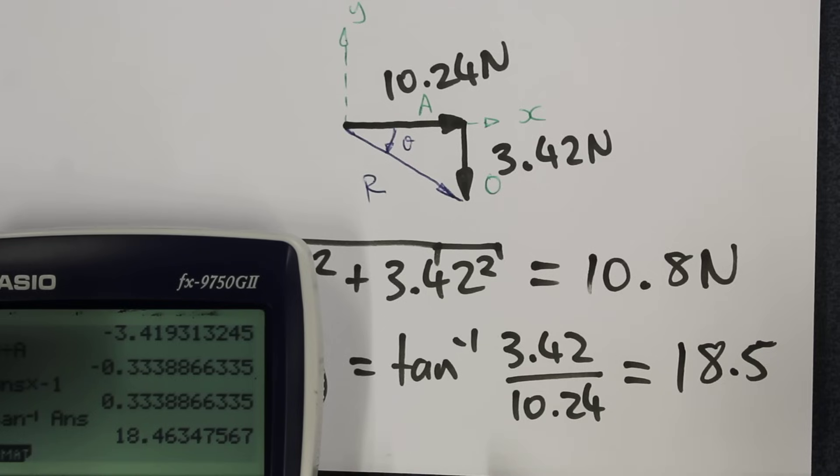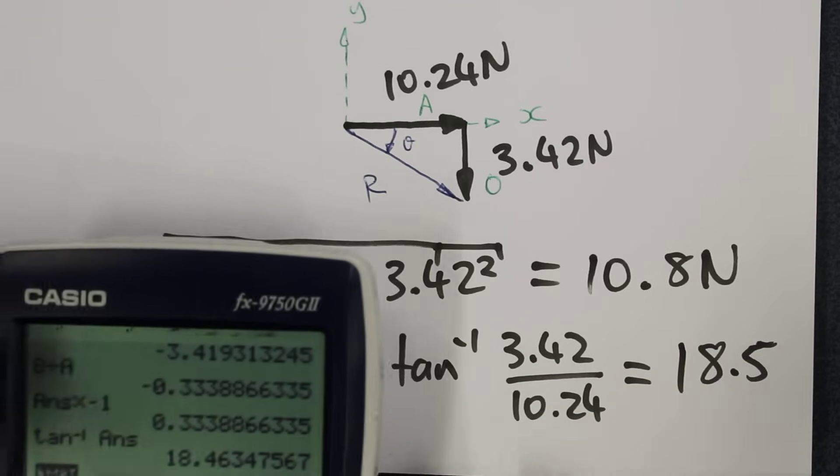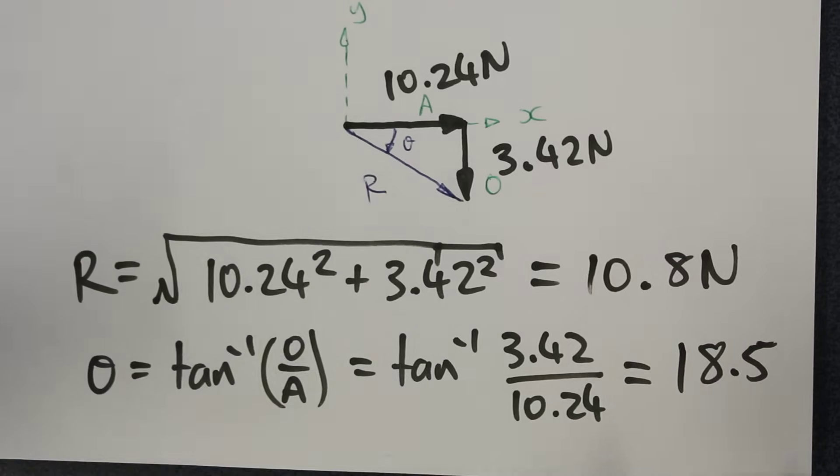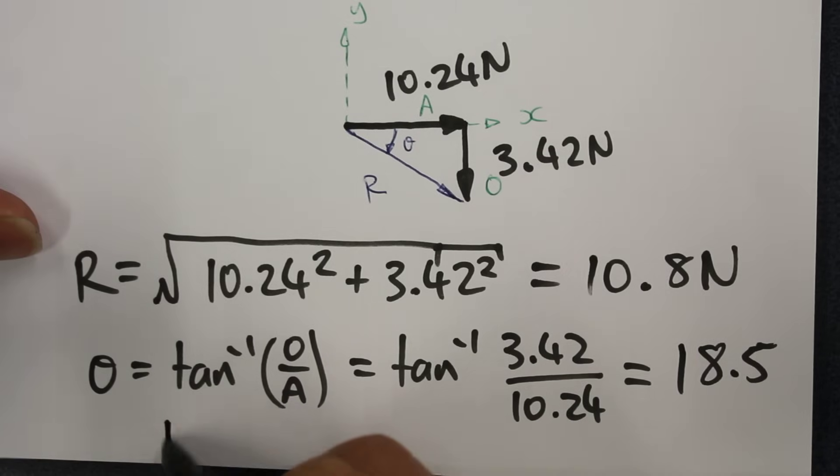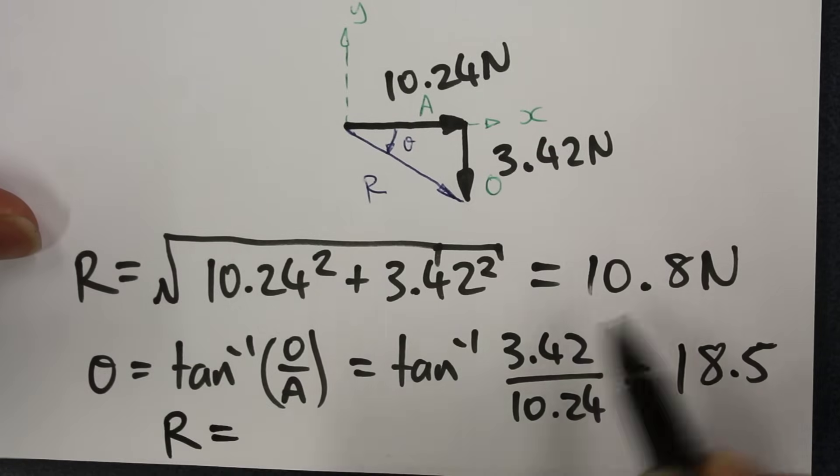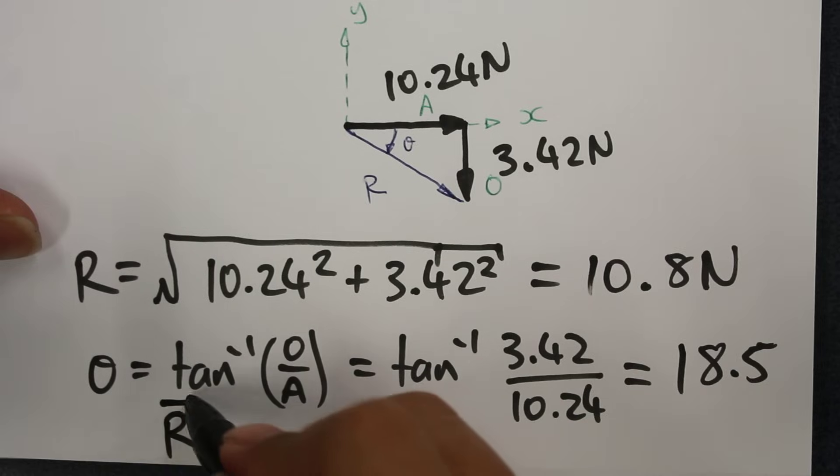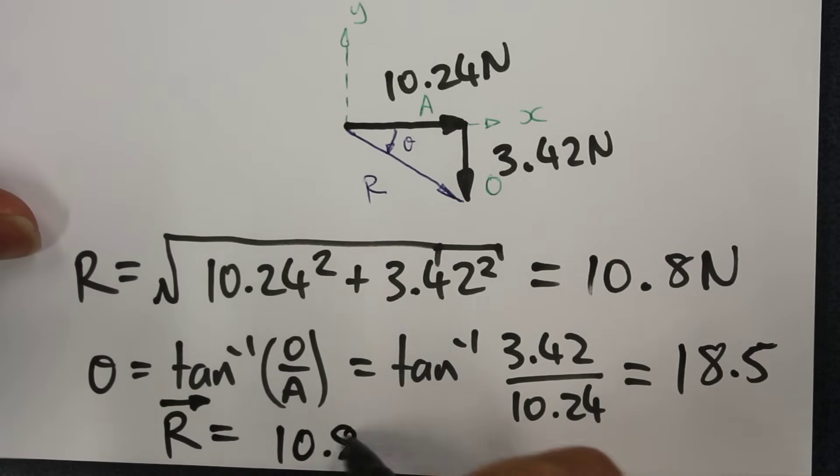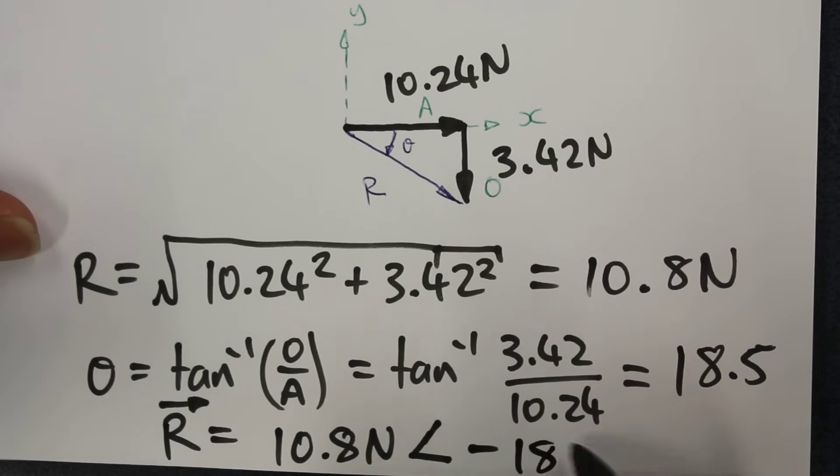My final answer for the resultant: the resultant vector is equal to 10.8 Newtons and is measured at an angle of negative 18.5 degrees as measured from the positive x-axis.